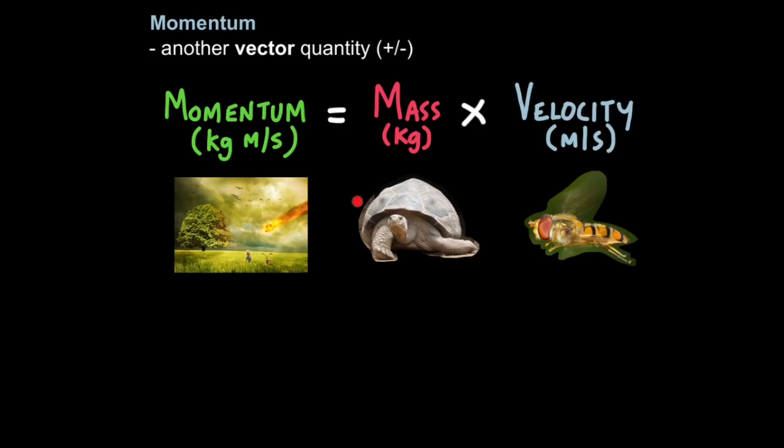For example a giant tortoise has a lot of mass but moves very slowly so the momentum is not going to be very high. Whereas if you take a fly which moves very quickly it has a high velocity but it has a very low mass so once again its momentum is not going to be very high. If you could combine both factors of these creatures so a very high mass with a very high velocity well then you're going to have a very high momentum. For example an asteroid collision, that's an excellent example of something with incredibly high momentum and objects which have very high momentum can cause a lot of damage.